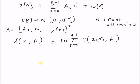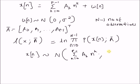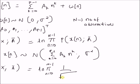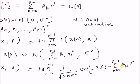So x(n) follows a Gaussian distribution with mean equal to the polynomial Σ_{k=0}^{p-1} a_k * n^k and variance equal to sigma squared. Using this information, the log-likelihood function becomes the logarithm of the product over n = 0 to N-1 of (1 / sqrt(2π σ²)) * exp(-(x(n) - Σ_{k=0}^{p-1} a_k * n^k)² / (2 σ²)).